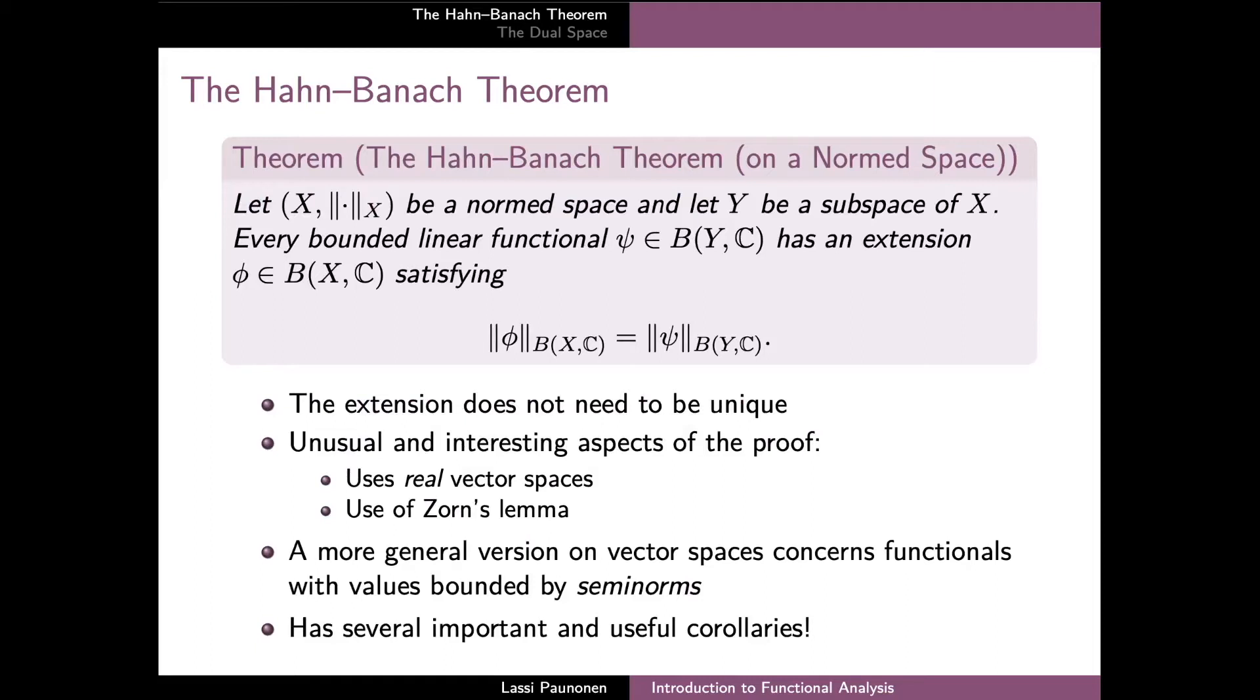It's also worth emphasizing that the extension in the theorem doesn't need to be unique, so the theorem purely concerns existence. The proof of the Hahn-Banach theorem is presented in detail in the lecture notes and it has a couple of interesting features that are perhaps not encountered in your day-to-day proofs in functional analysis. In particular, the proof really benefits from first interpreting the possibly complex vector space X as a real vector space instead, and then later using this real result to also prove the claim for the complex spaces.